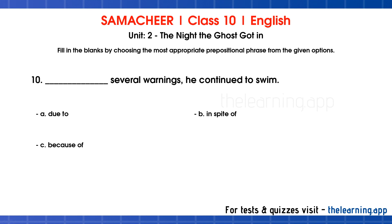Question 10: — several warnings, he continued to swim. Options are: a. Due to, b. In spite of, c. Because of. Correct answer is b. In spite of.